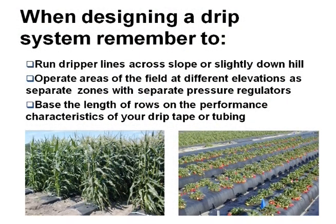When you design your system, it's nice to run the drip lines across the field or down — don't run them up-field, up slope. Why? You're going to lose pressure because you're fighting elevation, fighting gravity. You can do it if you've got short runs, but when you can run it the other way, just do it. If you have areas of the field at different elevations, treat them as different zones with their own regulator and their own manifold. That way you'll have fewer problems and more uniform growth. Base the length of row on the performance characteristics of the tape.